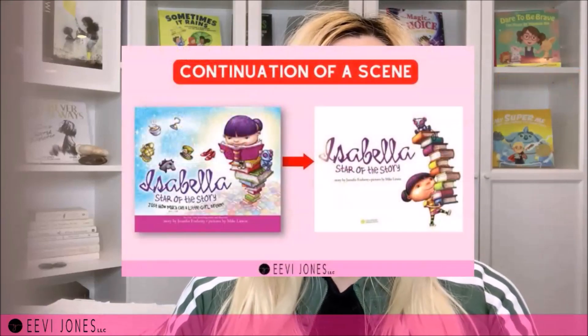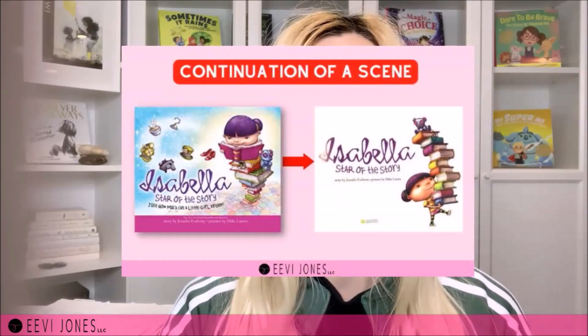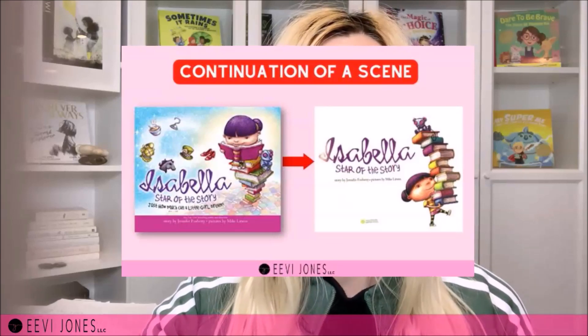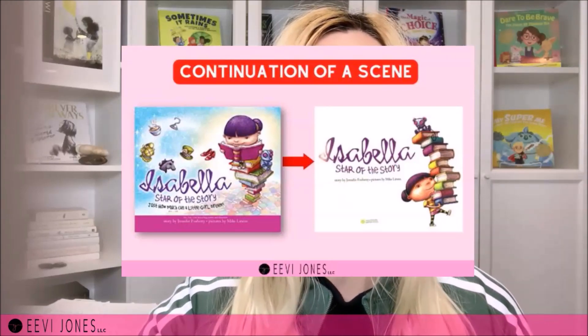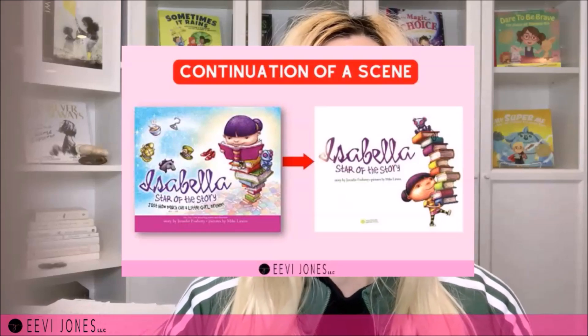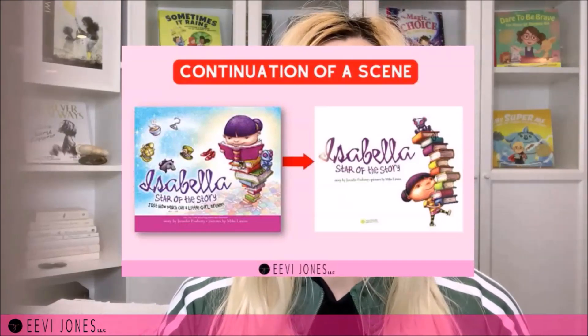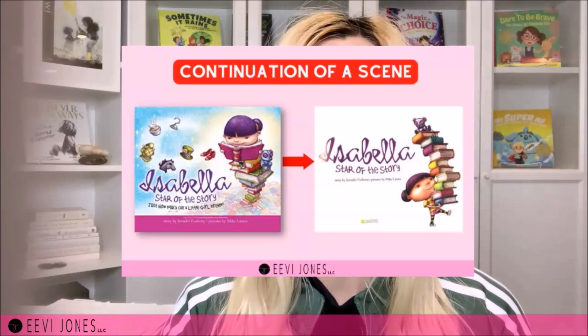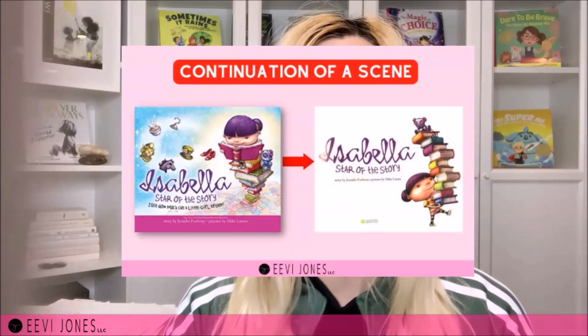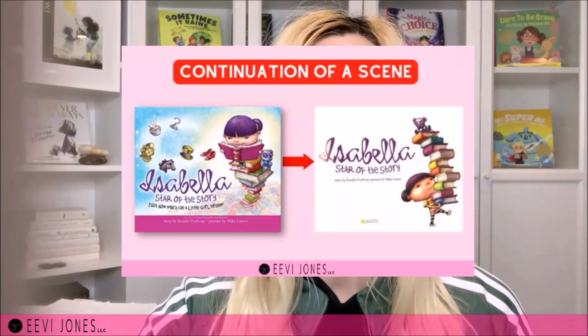The fifth layout idea is to show a continuation of your cover scene. The perfect example is Isabella, Star of the Story by Jennifer Fosbury. Similar to the first layout, it showcases the main character, but takes it further by continuing the image from the cover. On the cover we see Isabella sitting on a stack of books reading; on the title page we see her carrying that very stack of books — and now instead of her sitting on top, it's her teddy bear. Such a beautiful way of transitioning into the story.